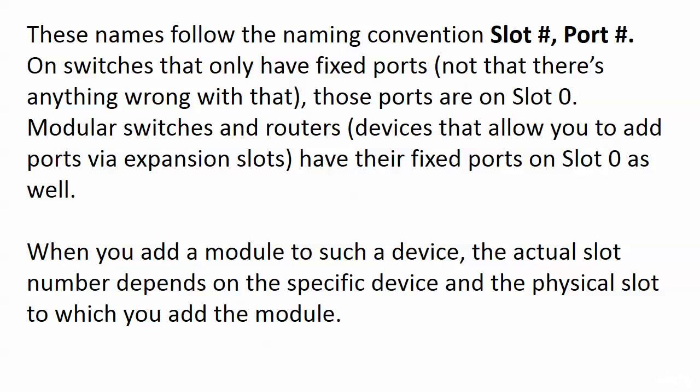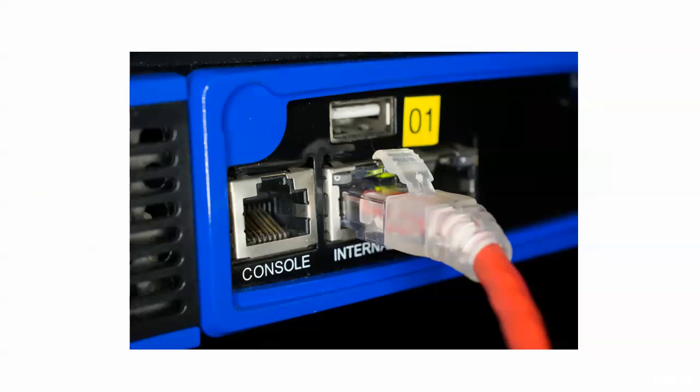When you add a module to a modular device, the actual slot number you end up with depends on the specific device and the physical slot to which you add the module. You might have a modular router that has two, three, or four expansion slots, and once you put a module in, that's where the slot number comes from. Modular devices and slot numbers won't be on your exam, but it's real-world knowledge — you see many more modular switches and routers today, and I wanted you to know where those names come from. We're not making them up just to make things difficult.